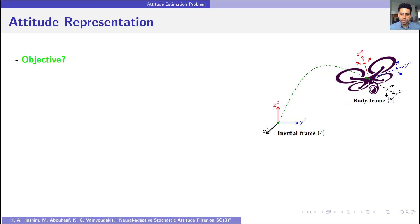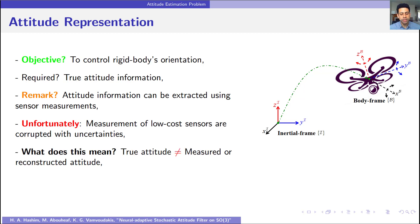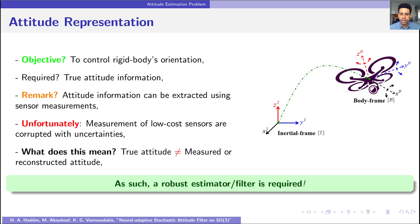The common objective is to control the rigid body's orientation. To ensure successful control process, the true attitude information is required. The attitude information is normally obtained through a group of sensor measurements. But unfortunately, measurements obtained by low-cost sensors are corrupted with uncertainties. This means that the true attitude information is not equal to the measured or algebraically reconstructed attitude. As such, a robust filter that is able to reject sensor measurement uncertainties and provide good estimates is required.